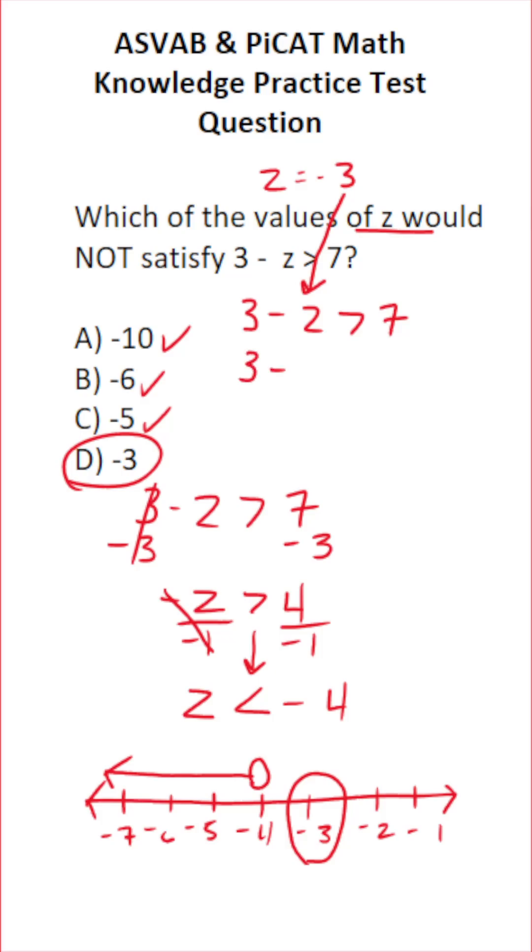This becomes three minus negative three greater than seven. Minus minus becomes plus. Three plus three is six. Is six greater than seven? It is not.